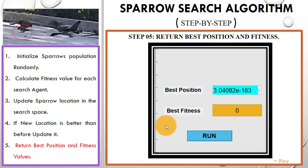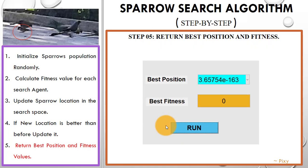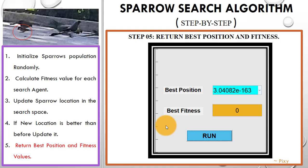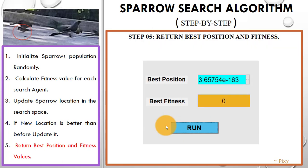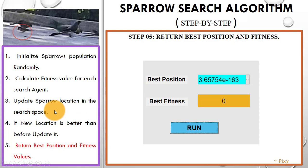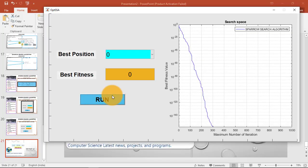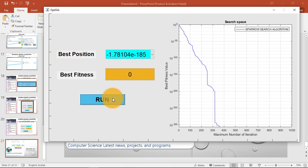Every time you run the code you will get different values. So in this algorithm: first we initialize the population randomly, then compute the fitness value for each agent and store the worst and best case, after that update the position, check if the new location is better or not, and return the best position and fitness value. Every time you run the code you will get a different position.